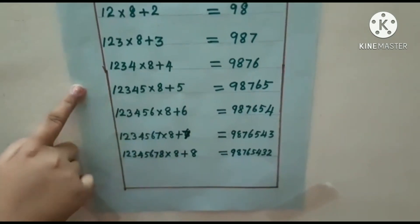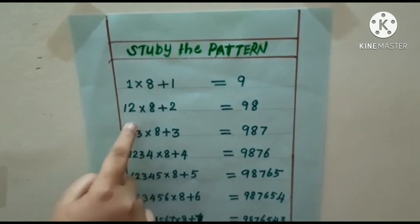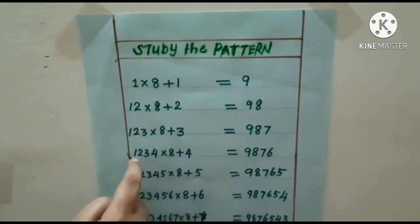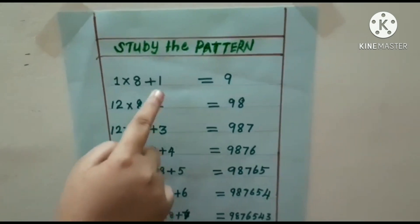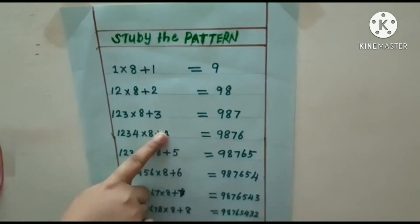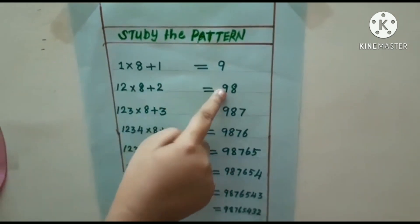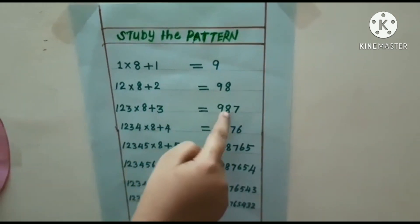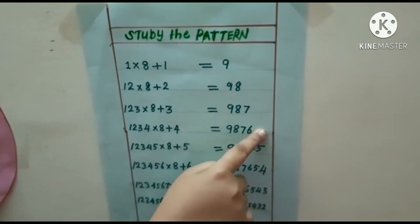How does it work? The multipliers go: 1; 1, 2; 1, 2, 3; 1, 2, 3, 4; and so on. And the results go: 9; 9, 8; 9, 8, 7; 9, 8, 7, 6; and so on in descending order.